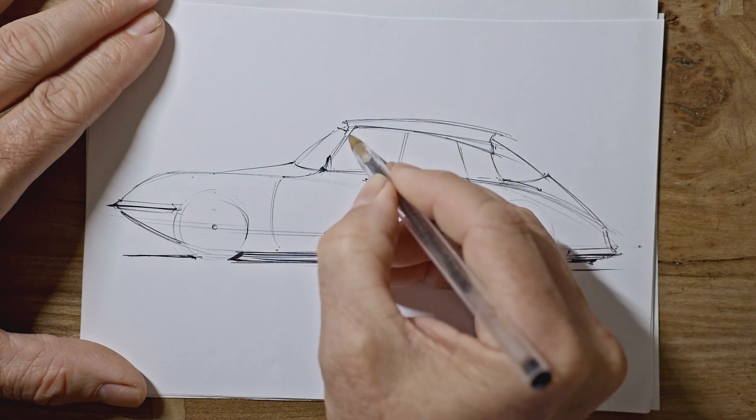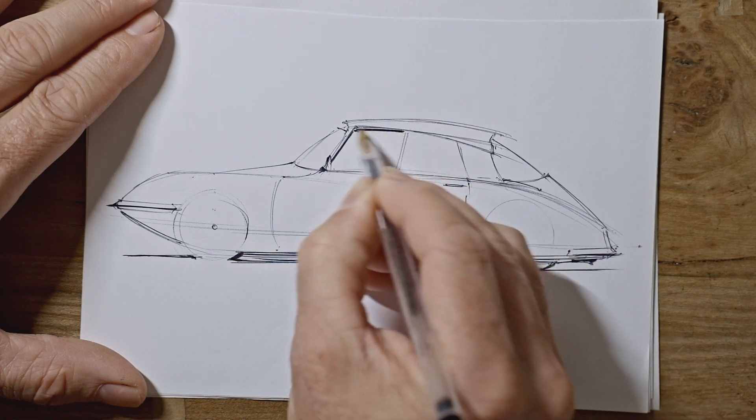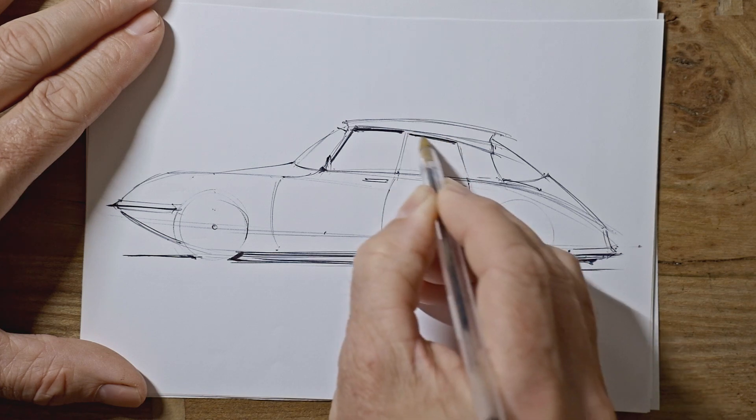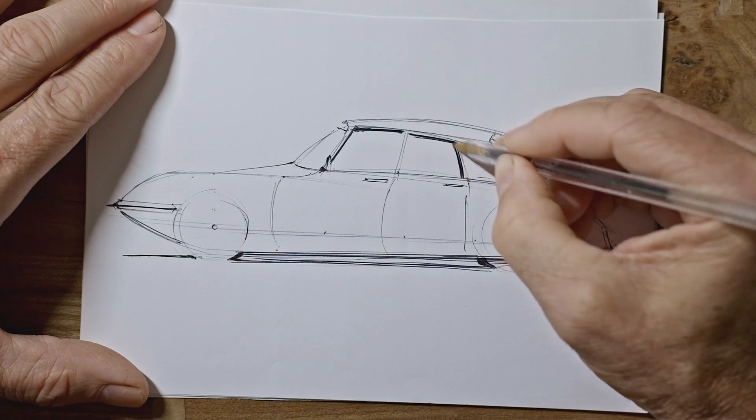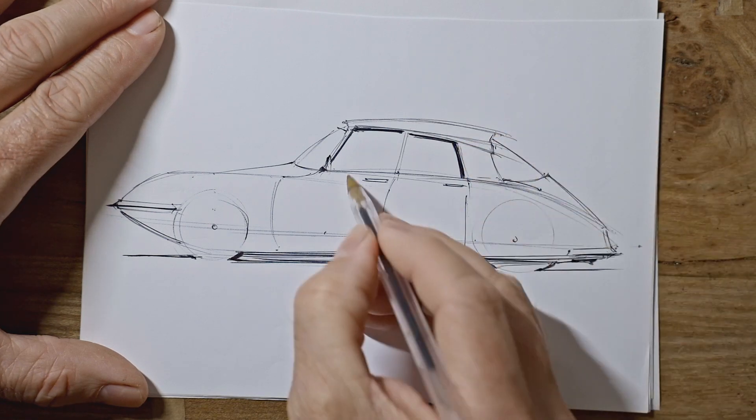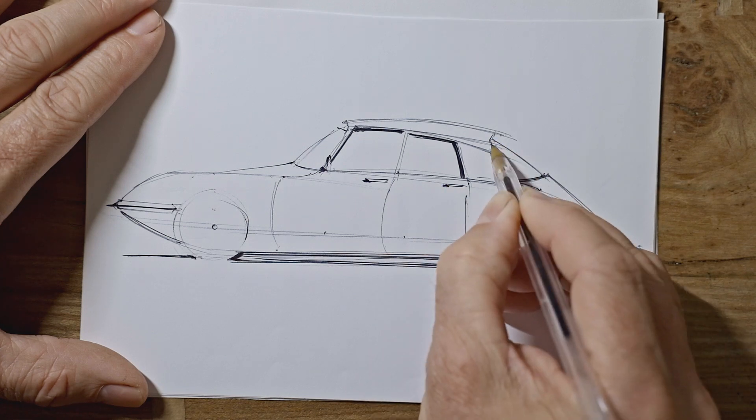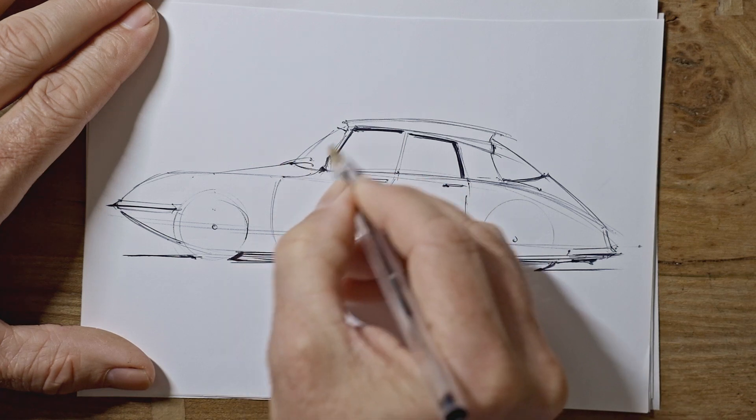And we can show a bit of thickness to the cabin by darkening up inside the roof. Showing this pillar on the far side.